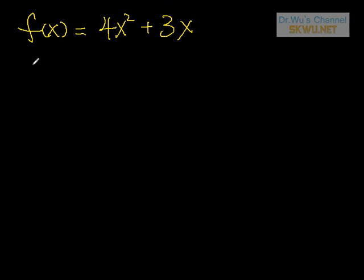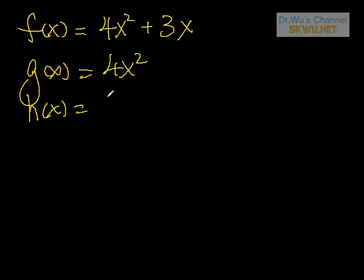So we can consider, let's call it another name. Let's call it g. g of x equals 4x squared and h of x equals 3x.